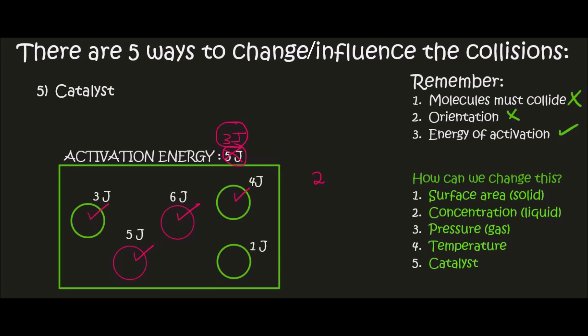In the first lesson, we said there are three things needed for a reaction to take place. In this lesson, we looked at the five different ways we can manipulate the system in order to speed up the reaction. Thank you very much for watching.